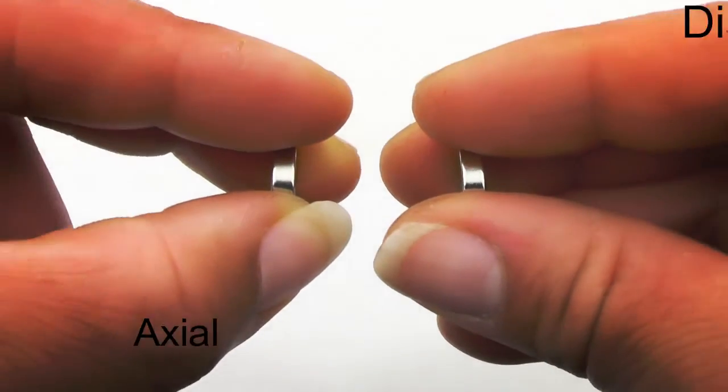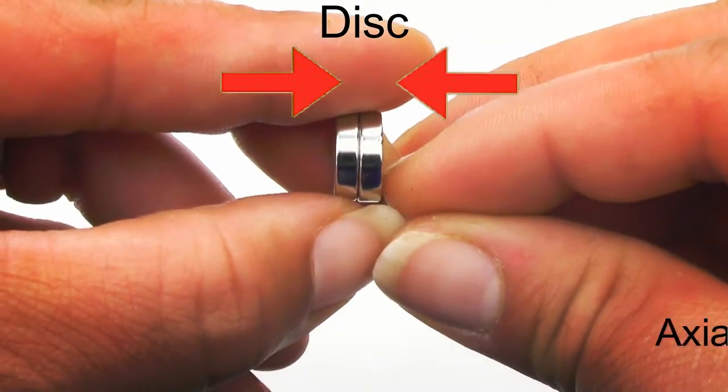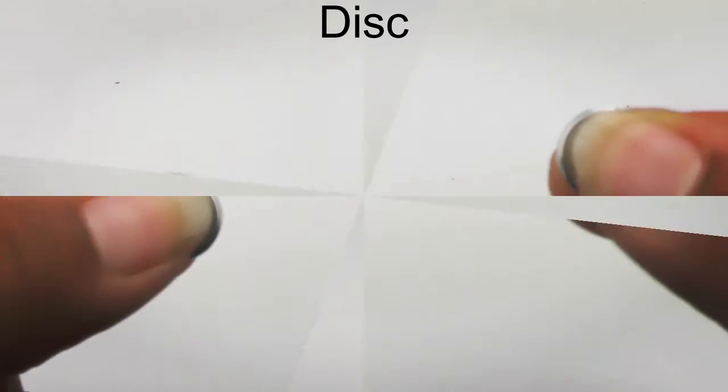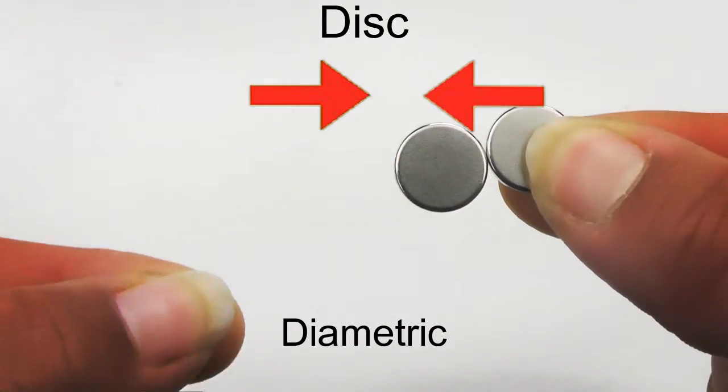Here are some examples. Axial discs are attracted to their flat circle surfaces. Diametric discs are attracted to their round edges.